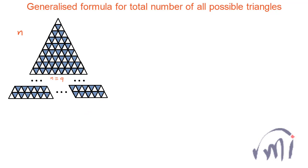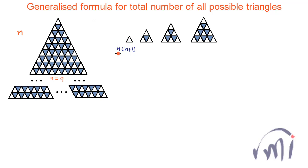First let us try to find the number of upright triangles — that means the triangles which are pointing upward. The number of triangles in this form will be equal to n multiplied by n plus 1 divided by 2, which is the nth triangular number. And when we count these inverted triangles, the number of such triangles would be equal to n minus 1 multiplied by n divided by 2.